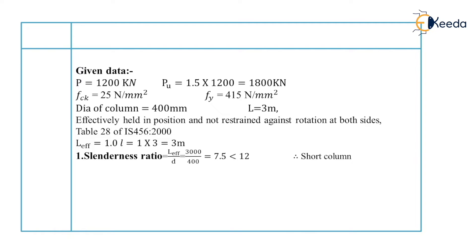Our first step is to find out the slenderness ratio. The slenderness ratio is equal to L_effective divided by the least lateral dimension. Here, least lateral dimension is the diameter of the column. Therefore, L_effective is 3000 mm and diameter of column is 400 mm. The slenderness ratio is equal to 7.5, which is less than 12, meaning our column is a short column.